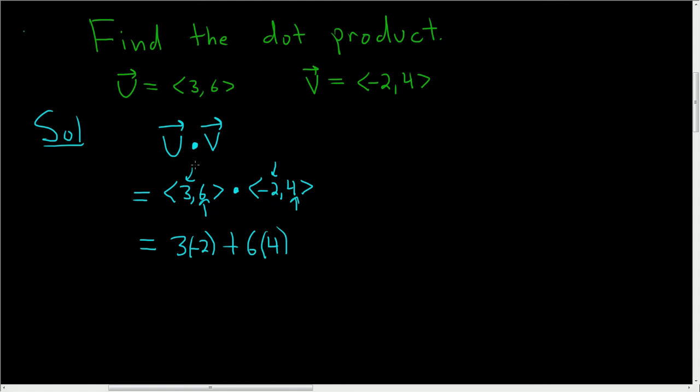So again, you just multiply 3 times negative 2, so the first components, and then you multiply the second components, so 6 times 4. 3 times negative 2 is negative 6, and 6 times 4 is 24.